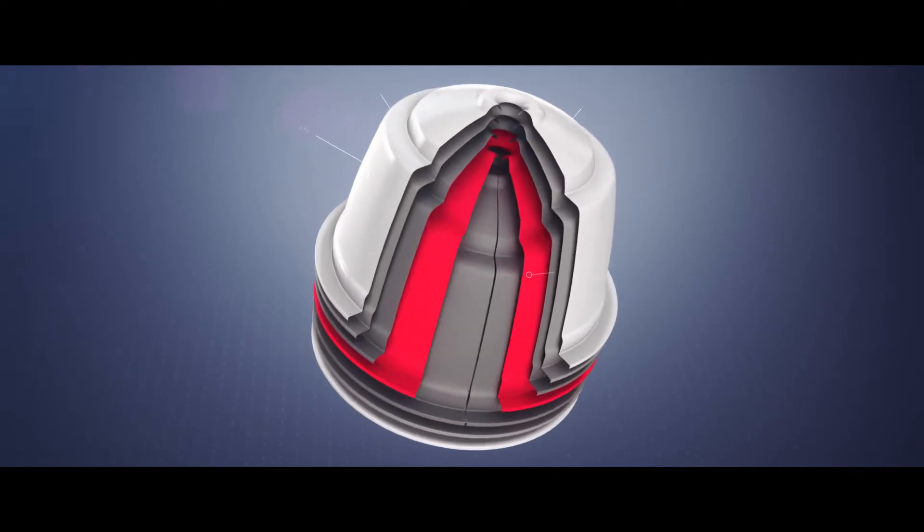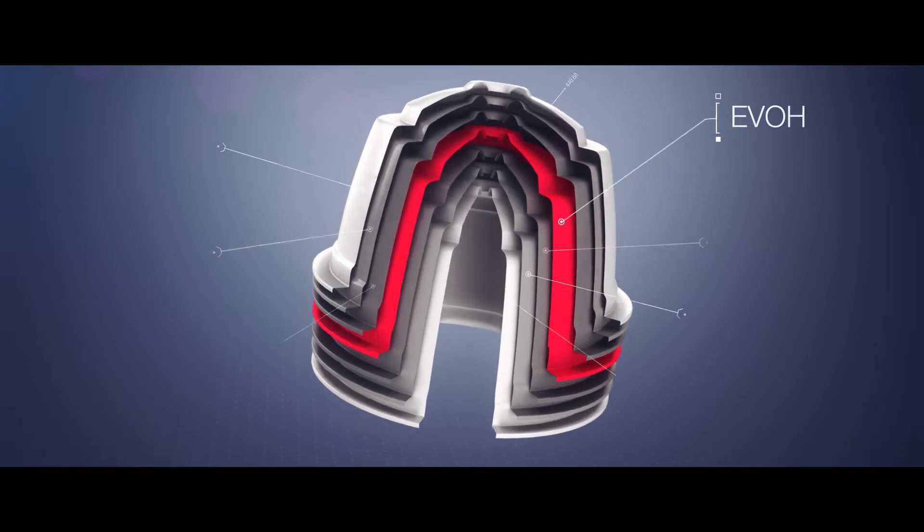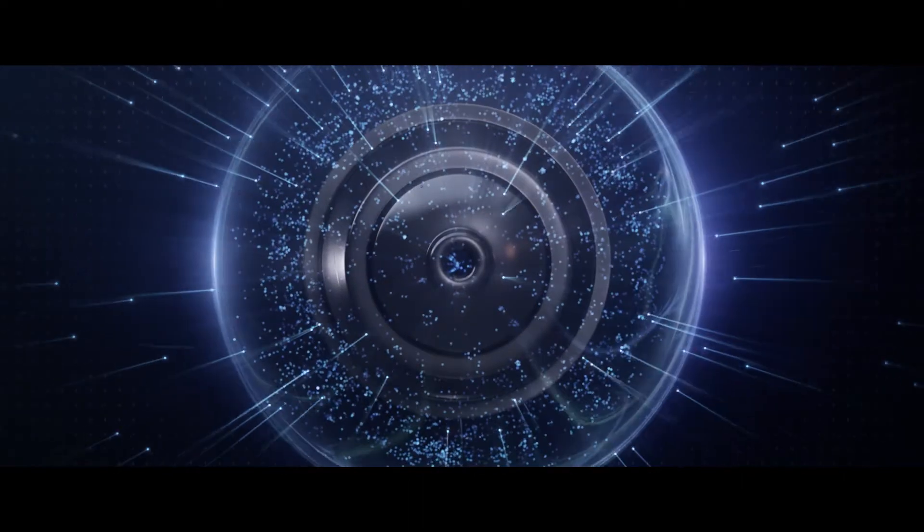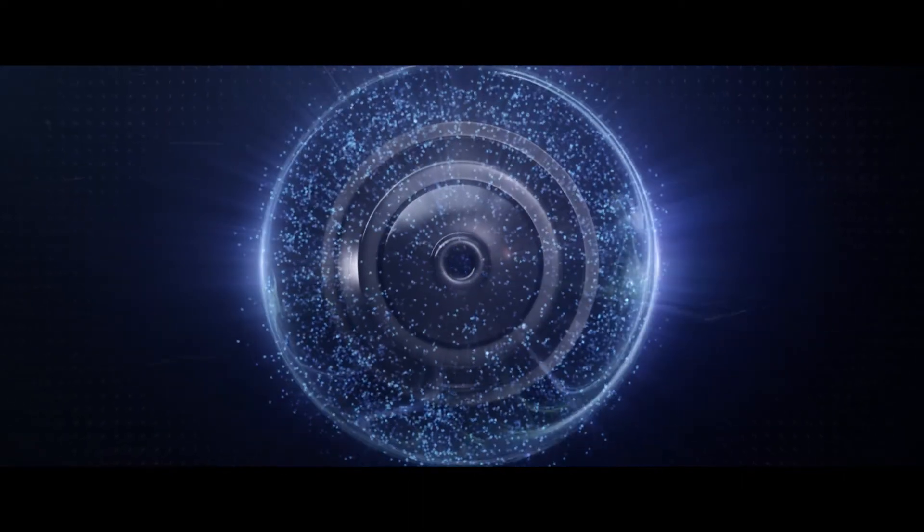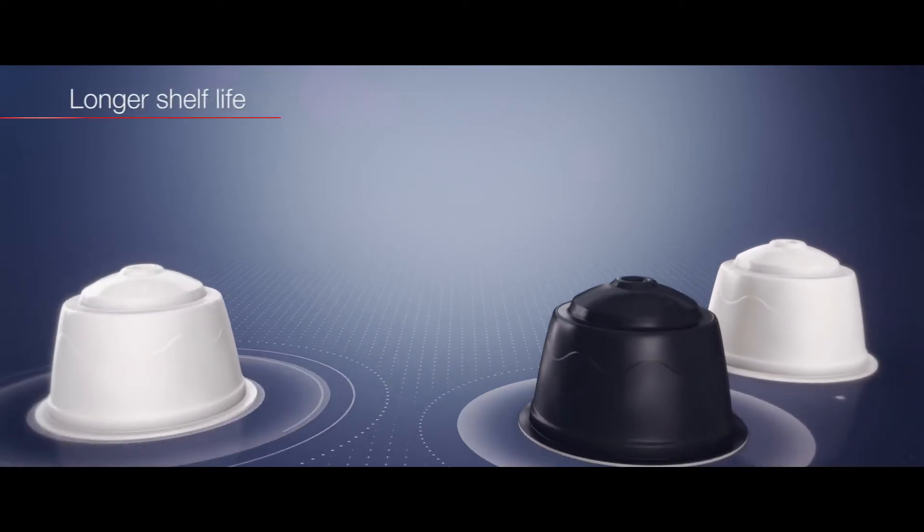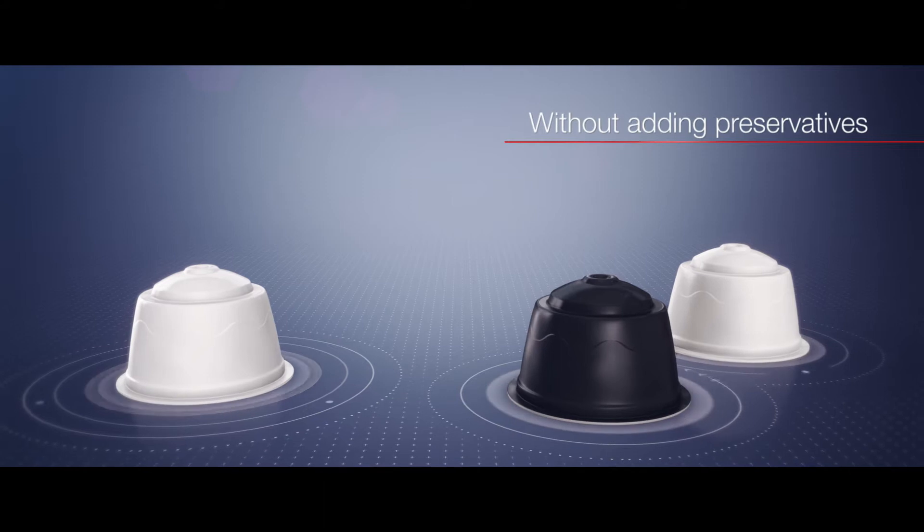The layer that is crucial for the production process is EVOH. It guarantees a higher oxygen barrier that protects the filling of the packaging from external effects. Hence, keeping the product inside fresh for a longer period of time, without adding preservatives.